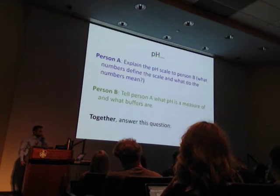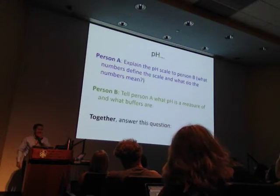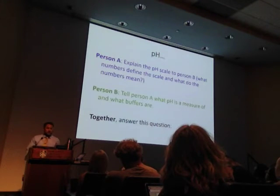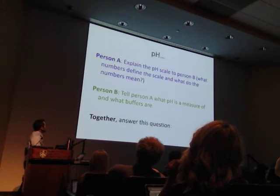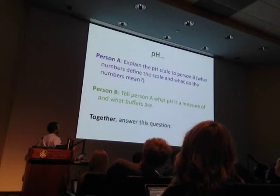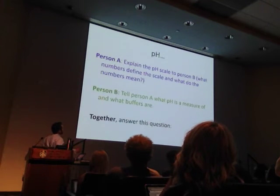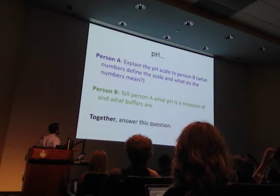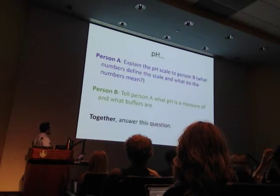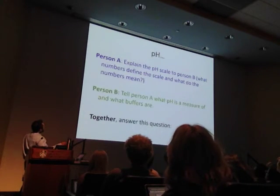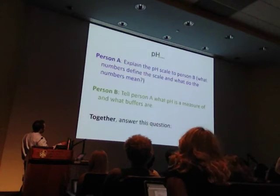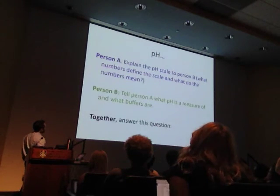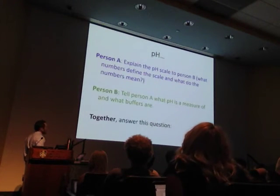Alright, another review concept — pH. Let's take a quick break. Person A: what do the numbers mean? Person B: what is pH, and what are buffers? Ready, go. The numbers indicate acidity, neutrality, or alkalinity. What would be an example of an alkaline number? 13. How about an acidic number? Below 5 — really, anything below 6.9 technically.